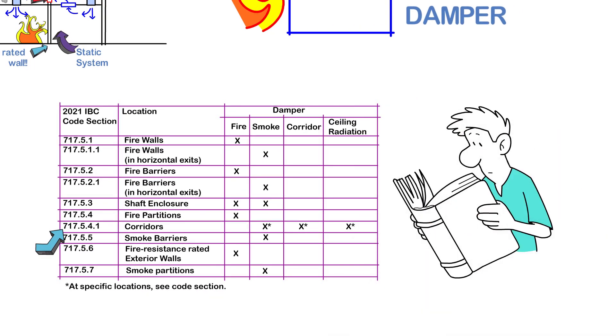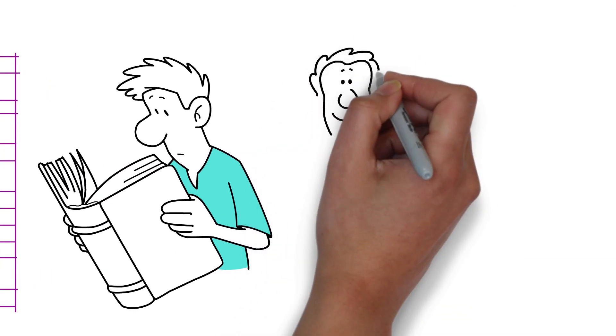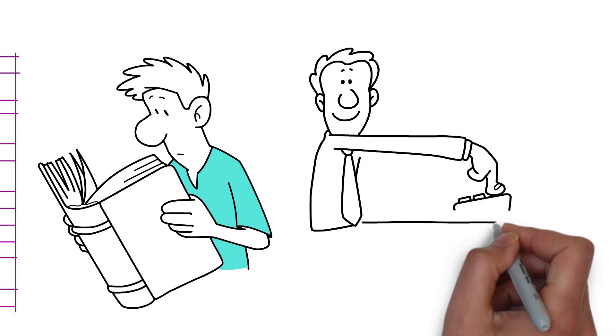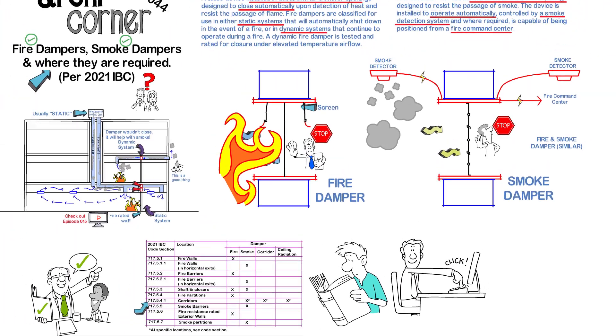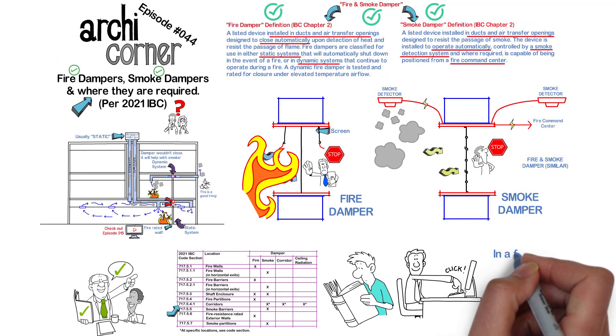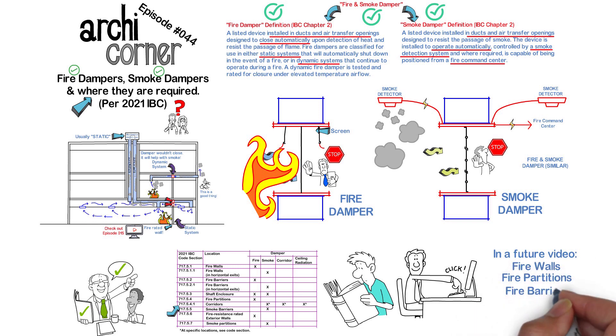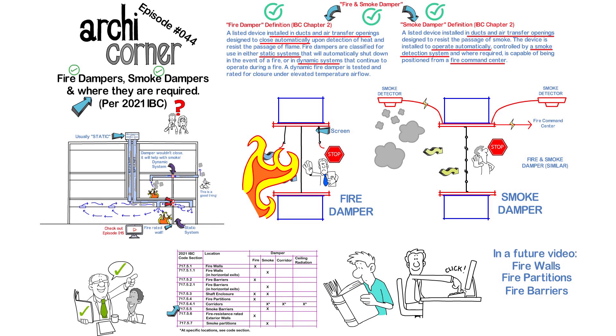Memorizing this table may be a bit complicated, but if you become a patron, you will be able to download this list so that you can always have it handy. I've spoken about fire rated walls before, but in a future video, I will talk more about specific differences between firewalls, fire partitions, and fire barriers. So keep an eye out for that video.